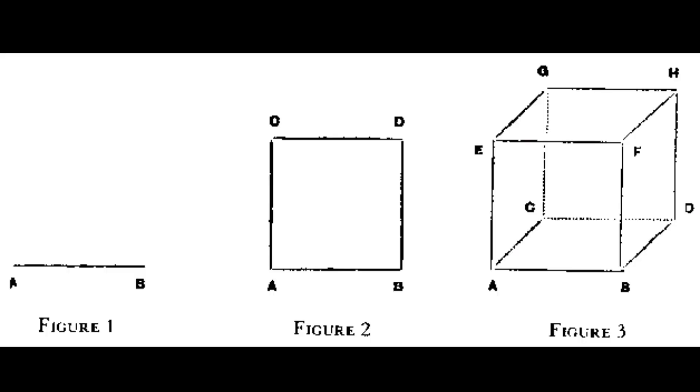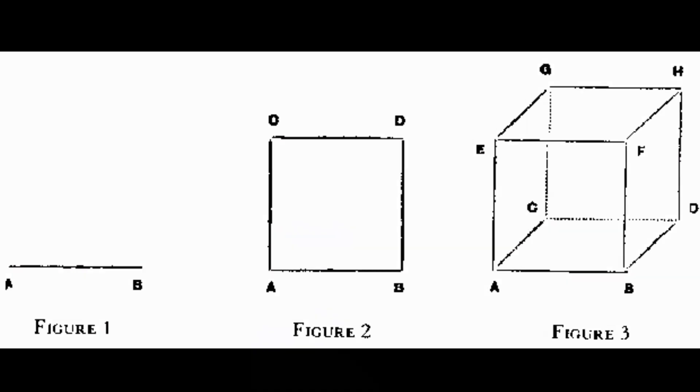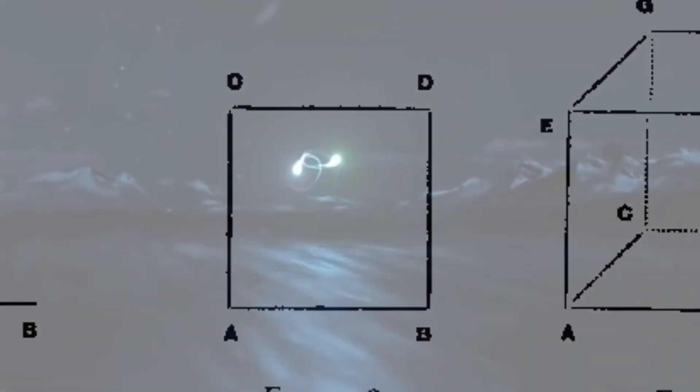Ask someone to name every dimension they know of and they'll likely list the following: length, width, and depth. They might also add time if they're thinking outside the three-dimensional box.